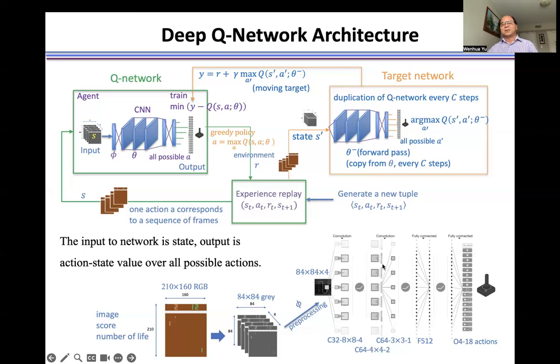Here is the details about the architecture of the Q network. This is the samples from the screen. For example, we use four of them as a state. And we crop this original image into 84 by 84.